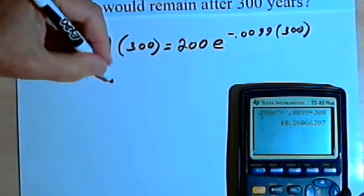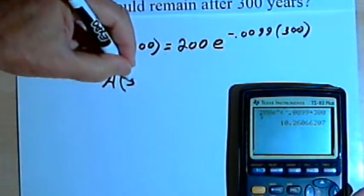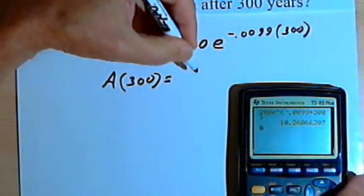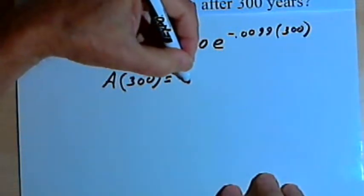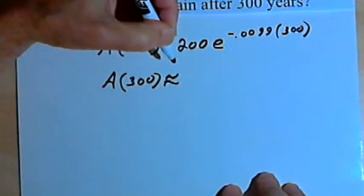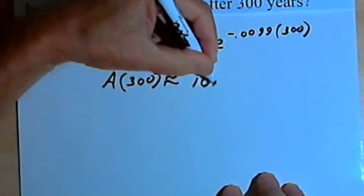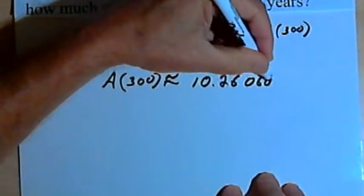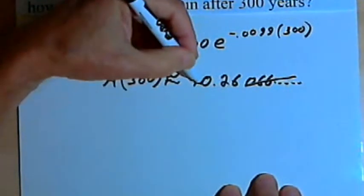And what I get is A of 300, the amount I have left, is going to equal approximately 10.26066. Again, this is a number that keeps going. Let's just round this to 10.26 grams.